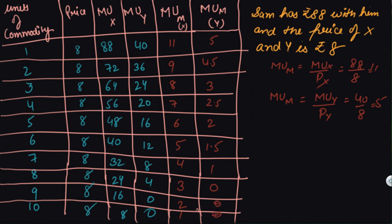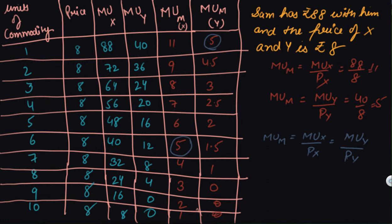The equilibrium point is where MU_x divided by price of X equals MU_y divided by price of Y. Looking at the table, we can find points where MU_m of X equals MU_m of Y. The matching pairs are: 5 and 5, 3 and 3, 2 and 2, and 1 and 1 — these are the equal points.